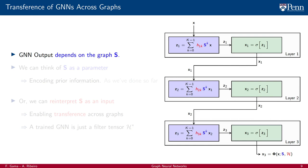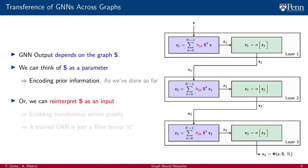The third point concerns the transference of graph neural networks across different graphs. GNN outputs depend on the graph S, and we can think of S as a parameter encoding prior information. But nothing prevents us from reinterpreting S as an input to the GNN, which would enable transference across different graphs, because a trained GNN is just a filter tensor H-star that can be executed on different graphs in the same way it can be executed on different signals.